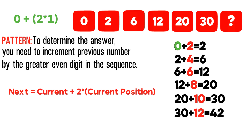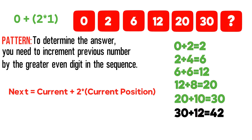So you add 2 to 0 to get 2. The next even number is 4, and 2 plus 4 equals 6. Then 6 plus 6 is 12. Then 12 plus 8 equals 20. Then 20 plus 10 equals 30. And the next even number is 12, so 30 plus 12 equals 42. The correct choice here is choice A, 42. Hopefully you've nailed this question and now know how to answer similar problems on the test.